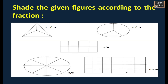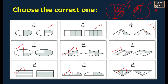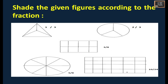Next we will see: shade the given figures according to the fraction. Previously the shaded part was given and we chose the correct fraction. Now the fraction is given and we are going to shade the figure. For 1 by 3, there are 3 parts and only 1 should be shaded. For 2 divided by 3, 2 parts should be shaded.